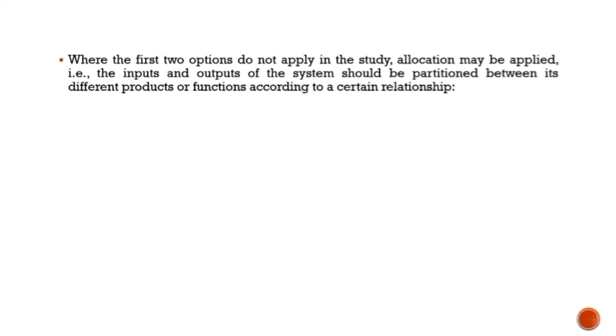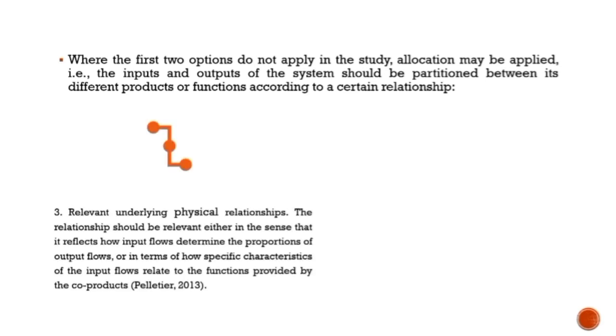Relevant underlying physical relationships: The relationship should be relevant either in the sense that it reflects how input flows determine the proportions of output flows, or in terms of how specific characteristics of the input flows relate to the functions provided by the co-products. When physical relationships are not an option, allocation may be applied using economic or other relationships.